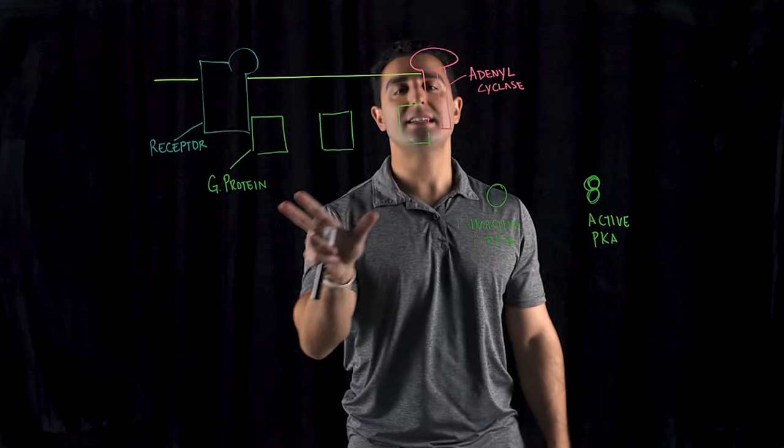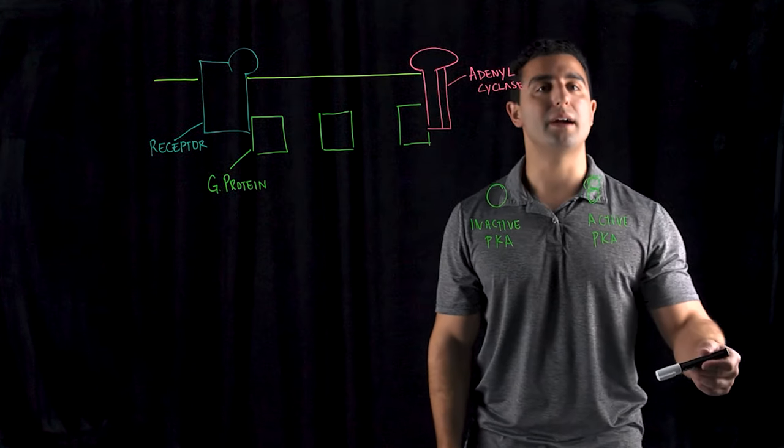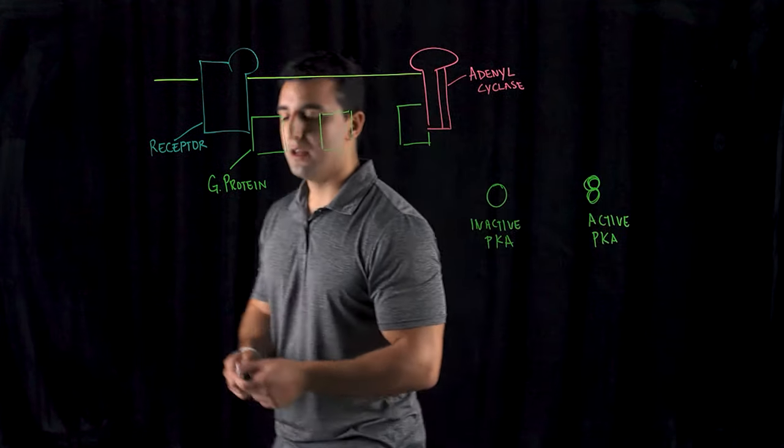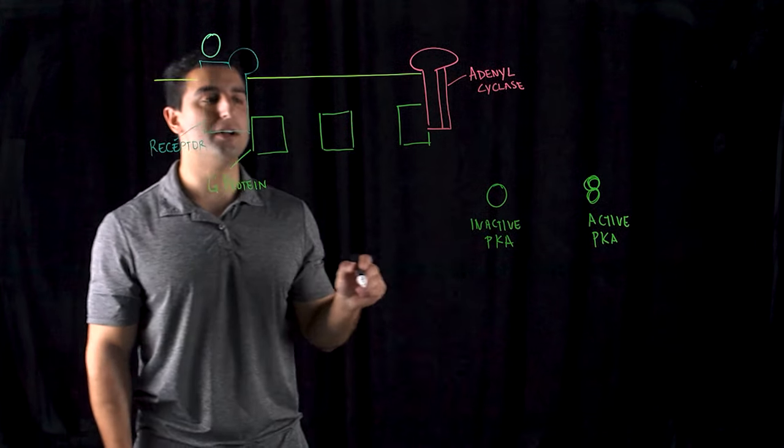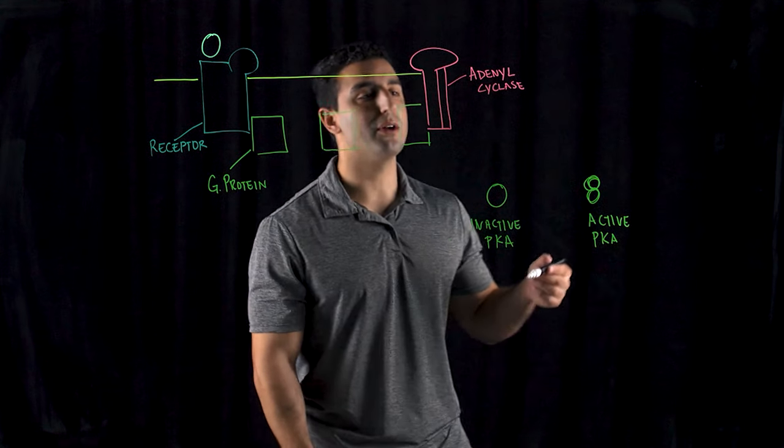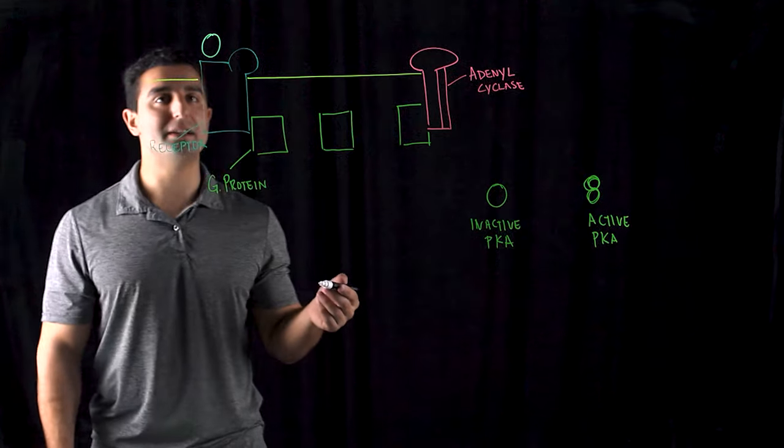That triggers a cascade downstream to create a secondary response and some kind of activation. The way it works is via the actual binding of the molecule, some kind of water-soluble or hydrophilic molecule. Let's look at epinephrine, a perfect example.